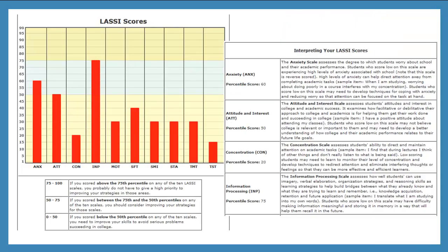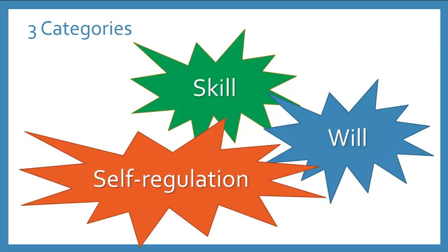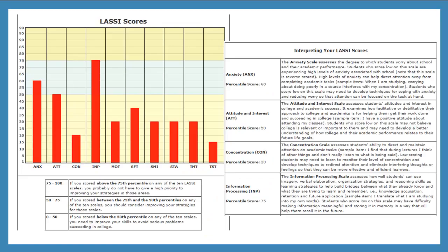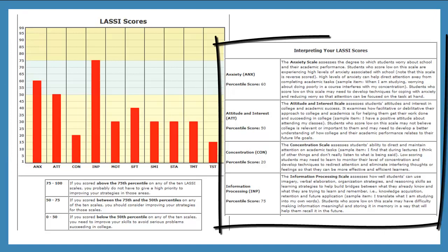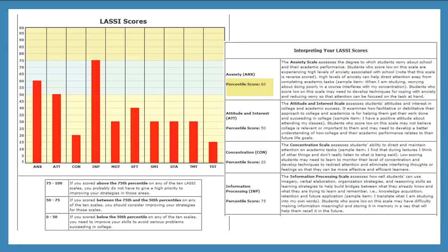You might be wondering what your LASSI scores mean. There are 10 scales of LASSI, which can be broken into three major categories of strategic learning: skill, will, and self-regulation. When you have completed the LASSI assessment, you will be given a graph that interprets your responses. The numbers on the left-hand side of the graph show percentile ranks, and below the graph will be an interpretation of what each bar represents and your percentile score for that scale.